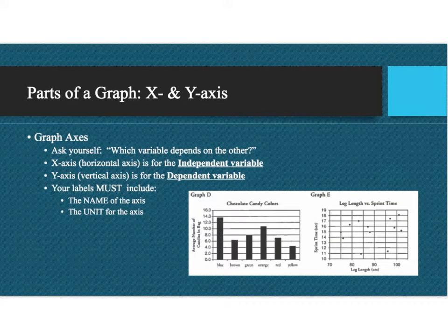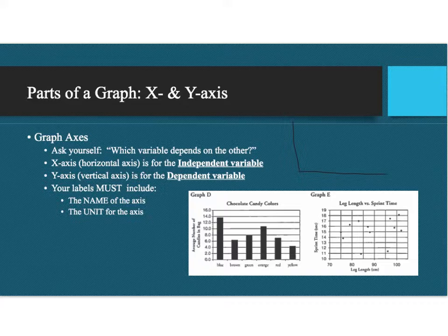After organizing your data and choosing what kind of graph to make, now we need to set it up. The first thing you want to do is draw an X and a Y axis — just draw a nice L shape. Then you're going to identify, hopefully, what the independent variable versus the dependent variable is. If you don't know, just ask yourself: what depends on the other?